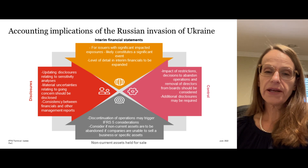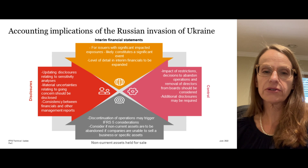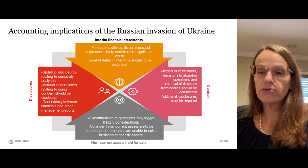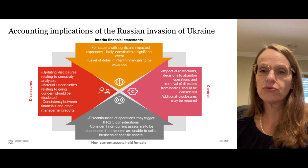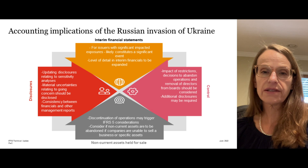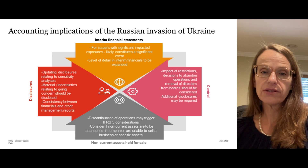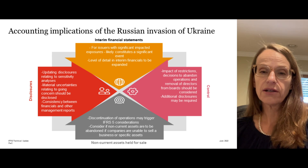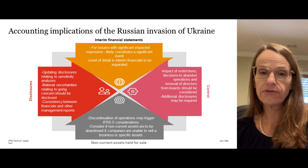Some disclosures normally required for complete annual financial statements may be necessary in those interim financial statements. Entities with exposure in affected markets should either explain the impact of the invasion or explain why it has not had a material impact despite exposure to significant risks. Entities should update disclosures relating to sensitivity analyses, for example by expanding the range of reasonably possible changes in key assumptions. Entities should also consider potential implications of the invasion when assessing ability to continue as a going concern — material uncertainties that might cast significant doubt on going concern should be disclosed in accordance with IAS 1. There should also be consistency between information disclosed in the financial statements and reported elsewhere, for example in management reports.